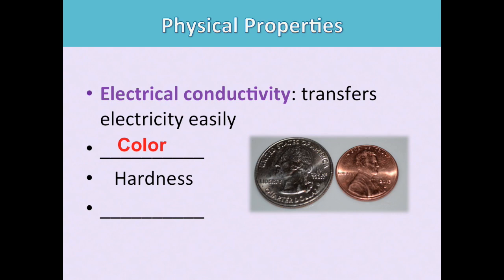Color is a physical property. For example, these coins are different colors because they're different materials. Hardness, you scratch it with a diamond and see if it scratches.